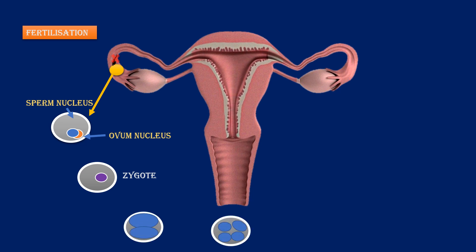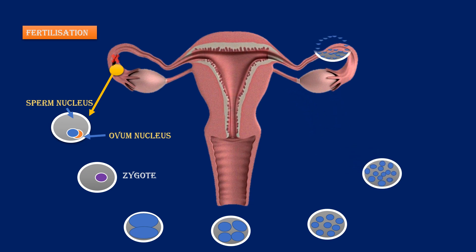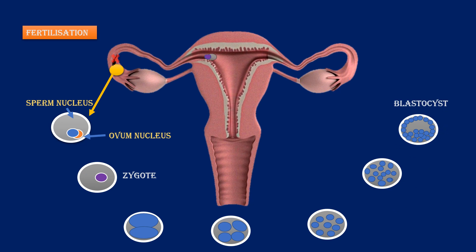The zygote continuously divides due to cell division, and a ball of cells — a structure called the blastocyst — is formed. The blastocyst reaches the uterus and gets implanted into one of the walls of the uterus. After implantation, the lady is said to be pregnant.